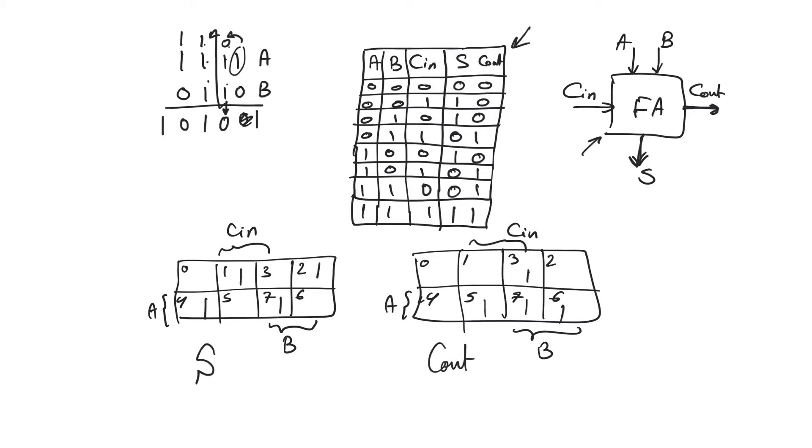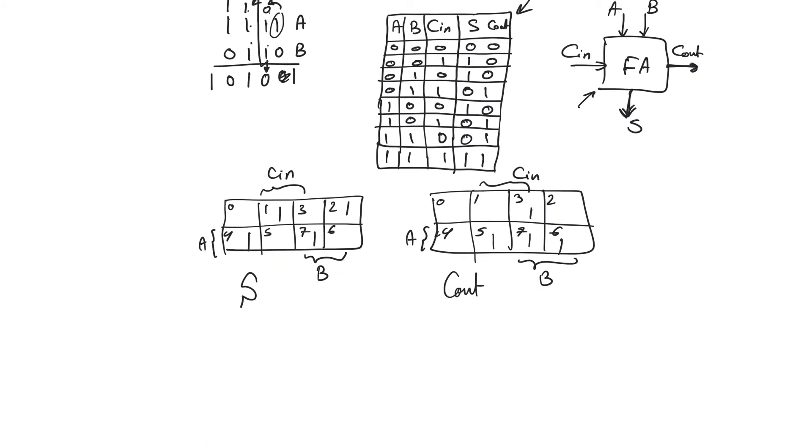For the sum, we will not have any possibility of minimization. The function for sum will be A XOR B XOR CN. In expanded form, it will be A B CN, A bar B bar CN, plus A bar B CN bar for min term 2, and min term 4 is A B bar CN bar, and min term 7 is A B CN. It basically passes a 1 whenever we see an odd number of 1s at the input.